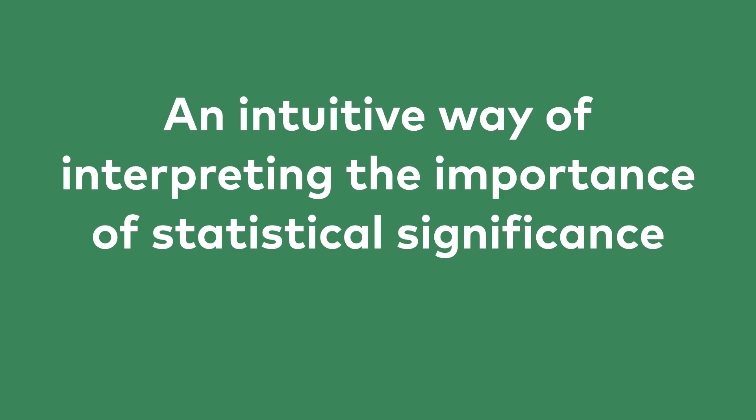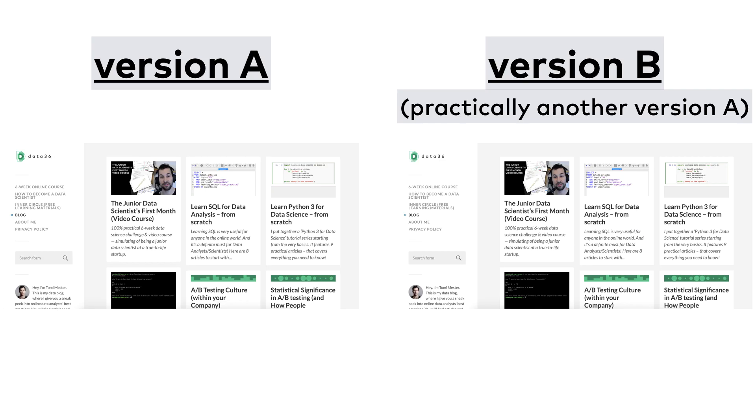There is a very practical and intuitive way to understand the importance of statistical significance, and that's running an AA test. What's an AA test? Basically it's like an AB test — you randomly split your audience into two groups.